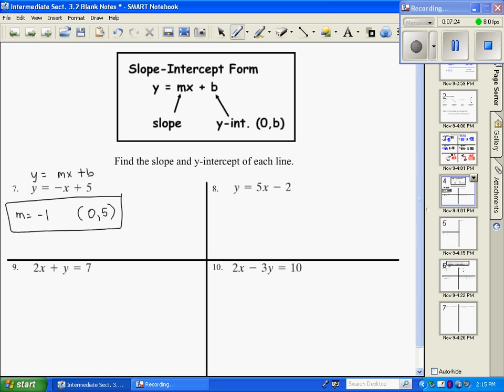And number 8, if I wrote it y equals mx plus b, my slope is 5. And my y intercept is 0, negative 2.